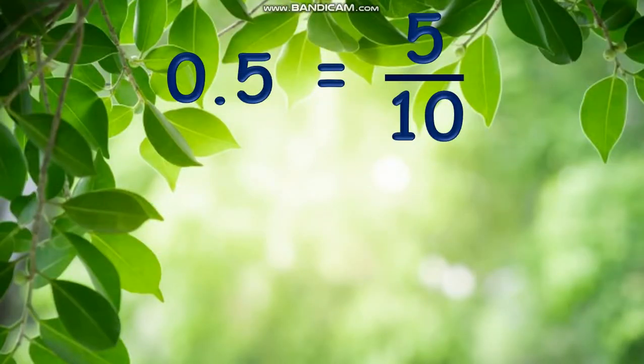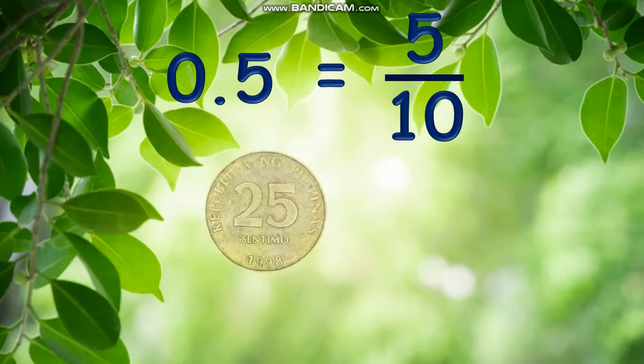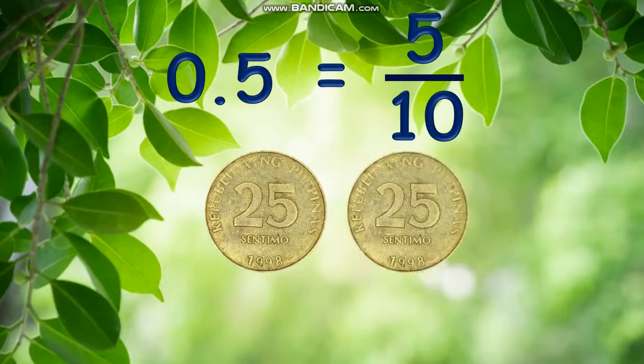The relationship among pesos, bills, coins, and centavos is a good model for decimal numeration. How can we visualize the decimal 0.5 with money? Simply, two 25 centavos equals 50 centavos or 0 pesos and 50 centavos.